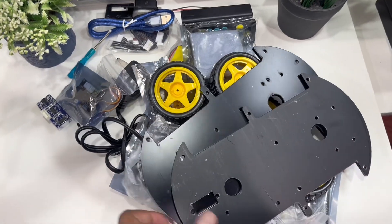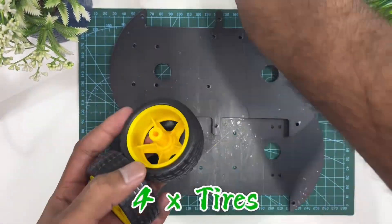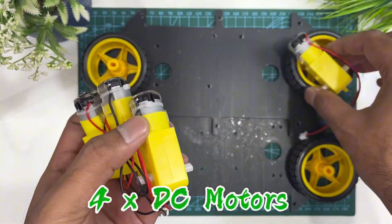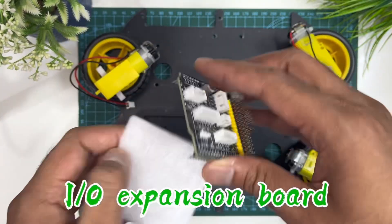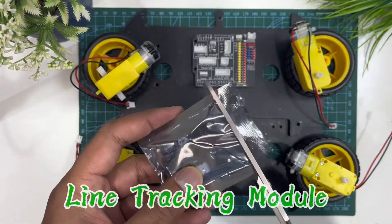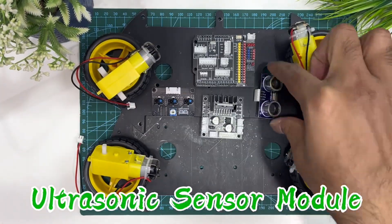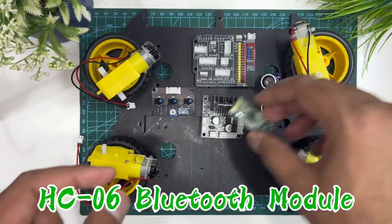Let's see the parts first. Two acrylic chassis, four tires, four DC motors, input output expansion board, L298N motor driver, line tracking module, ultrasonic sensor module, HC06 Bluetooth module.